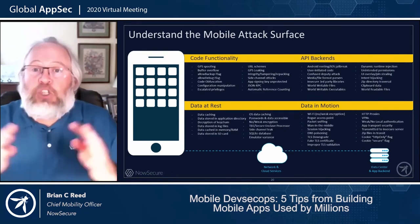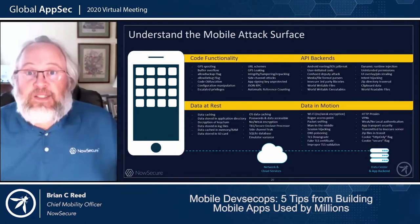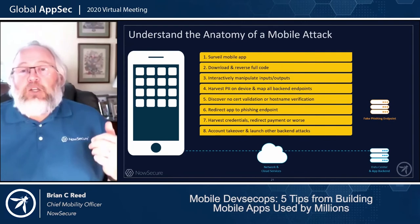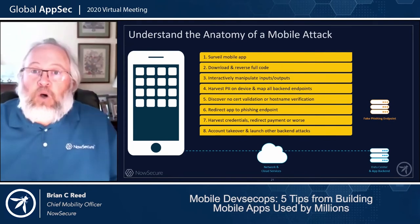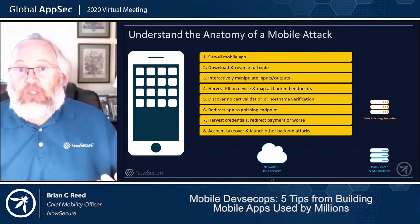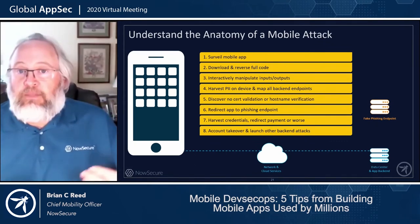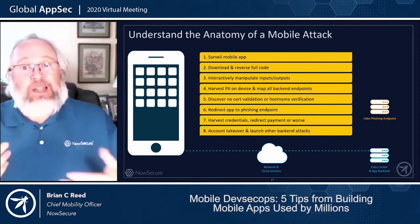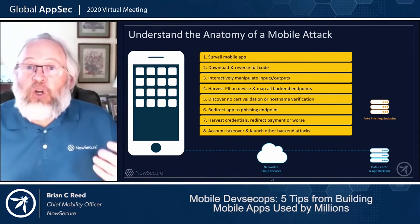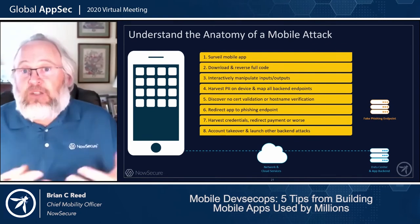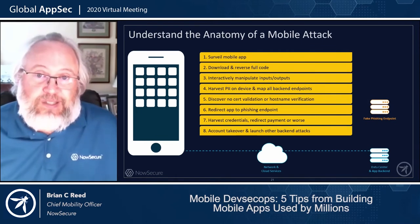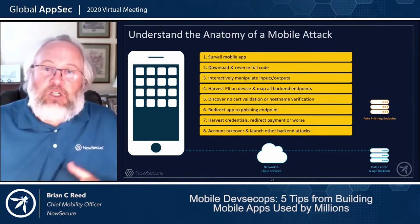We find that's largely because companies don't have the right testing techniques in place for mobile, so these areas go uncovered and defects escape into the wild. Whether you are new to mobile or not, here's a quick mobile attack walkthrough: a bad actor downloads the mobile app and reverses it — lots of reversing tools are available to get close to source code. They'll manipulate the inputs and outputs to learn how it behaves, and more often than not can harvest PII from an application and device as well as its communication to the backend.